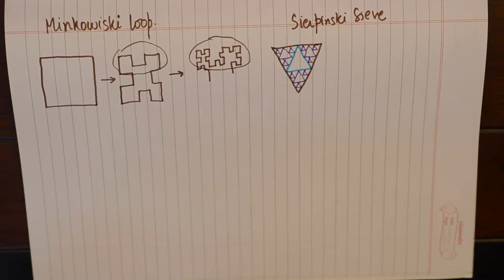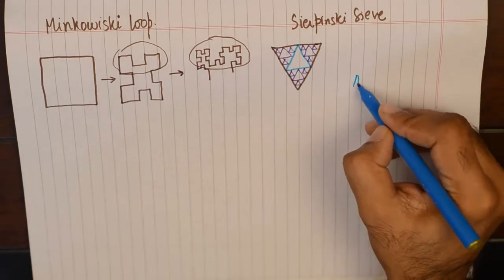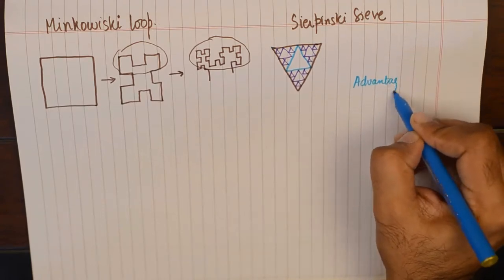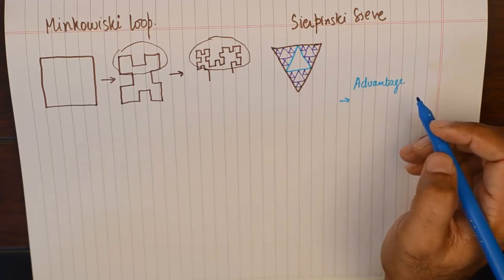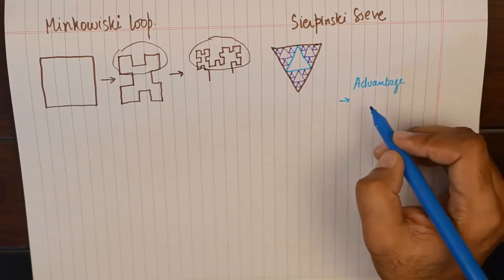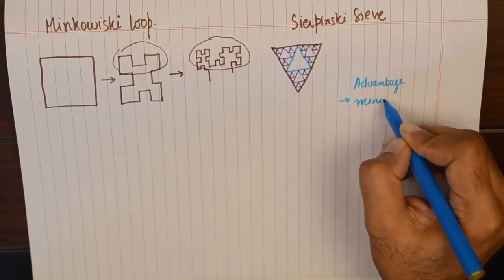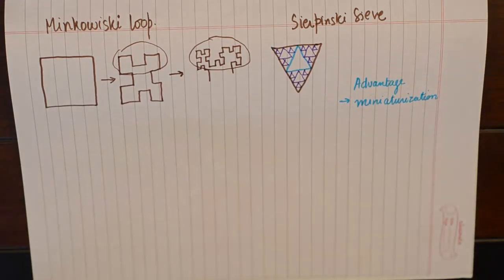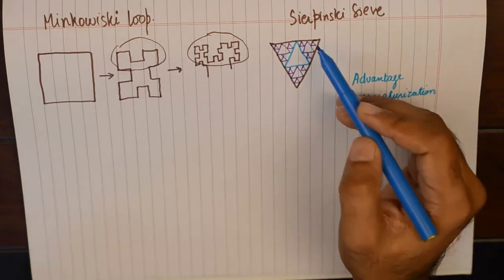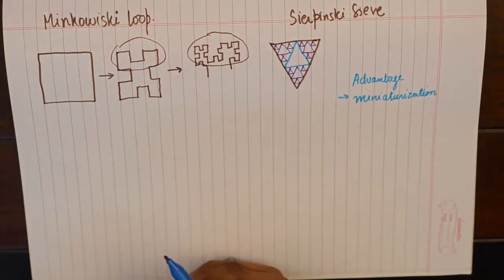Coming to the advantages and disadvantages of fractal antennas: the main advantage that makes fractal antennas so popular is miniaturization. We want to place high-bandwidth, high-power, greater-impedance antennas into smaller devices, and only fractal antennas can solve that problem because the area remains the same while all the other parameters shoot up.